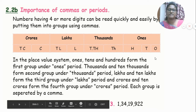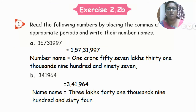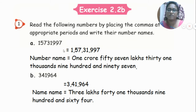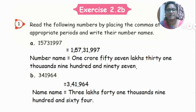Let's move on to our exercise and see one or two sums so you can understand more. Read the following numbers by placing the commas at appropriate periods and write their number names. We have to read the number from right side to left side. Ones, tens, hundreds — after this we place a comma — then thousands, ten thousands, then comma, then lakhs, ten lakhs, then comma, then crores.